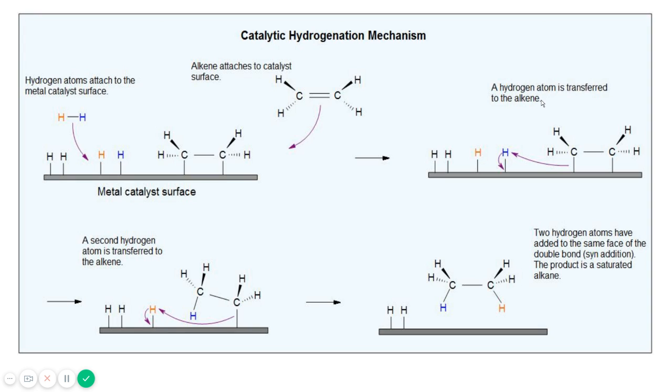Like you can see, hydrogen atom is transferred to the alkyne here and then the second hydrogen is transferred to the alkyne here. Now two hydrogen atoms are added to the same face of the double bond in the syn addition. So the product is cis.